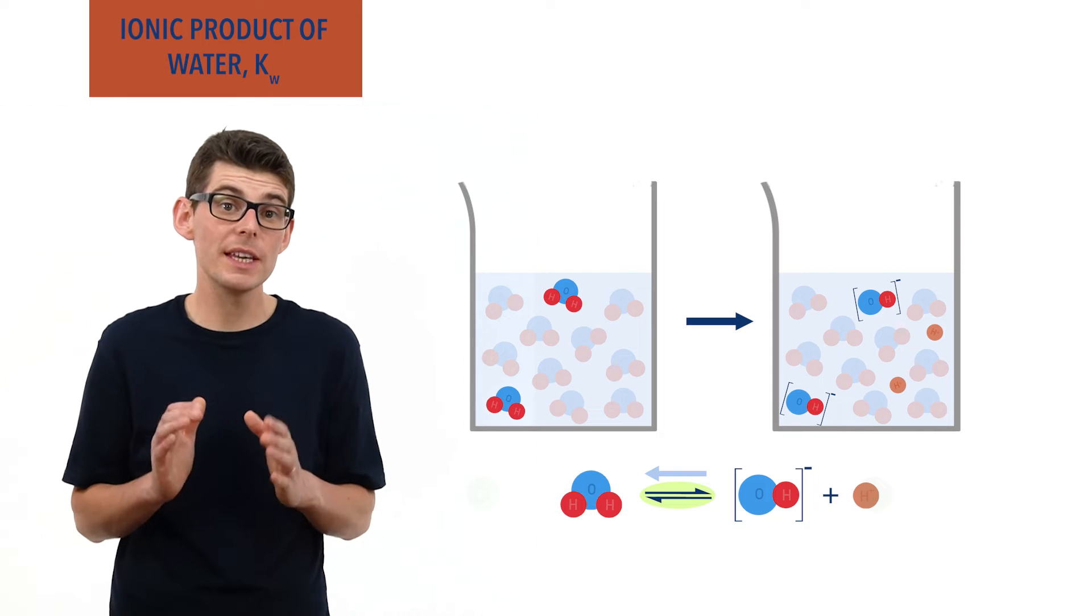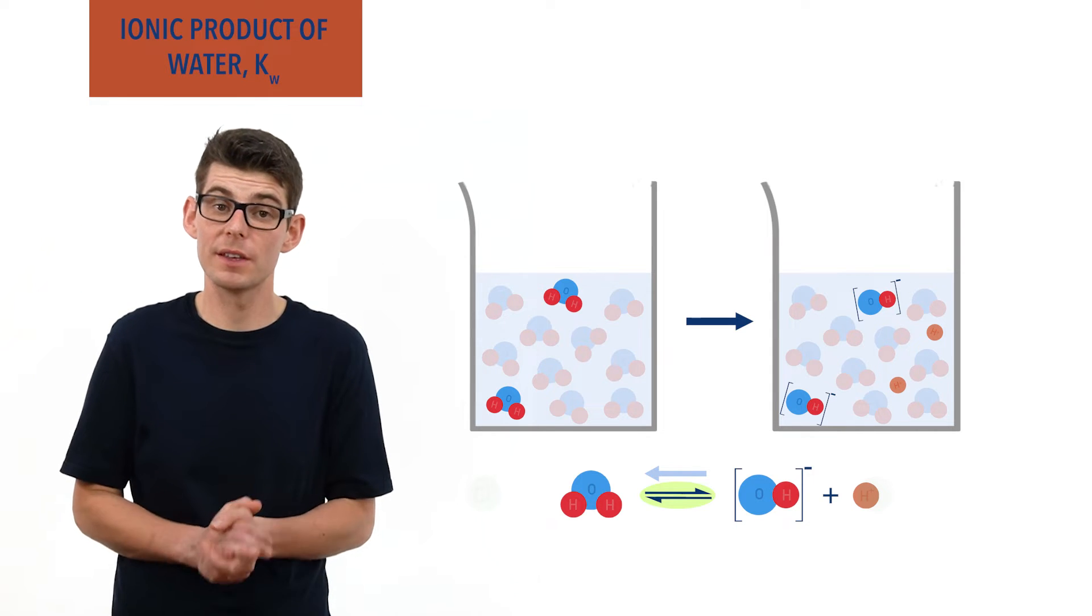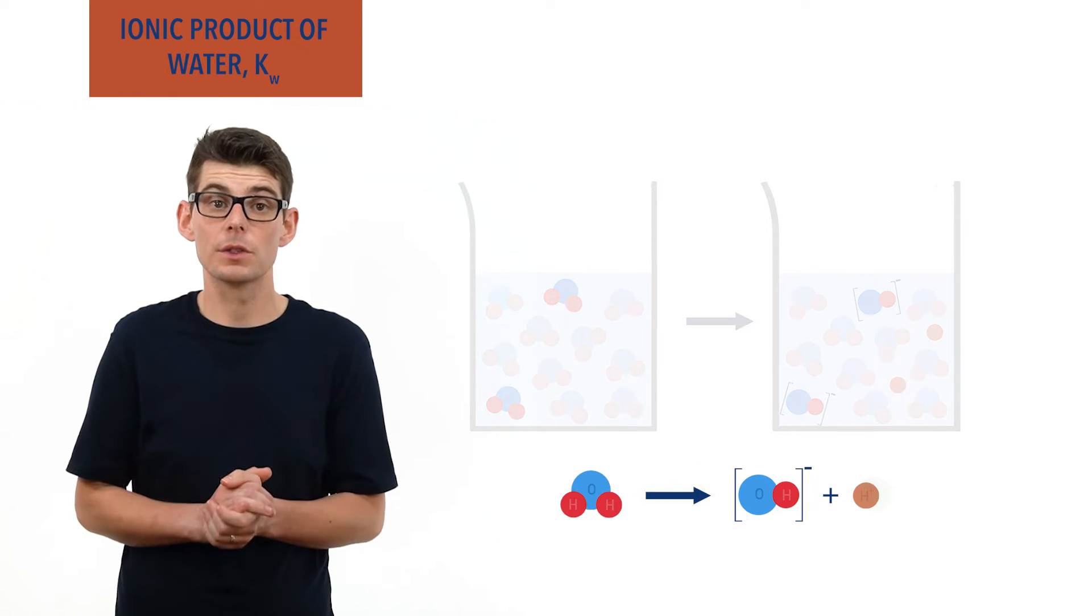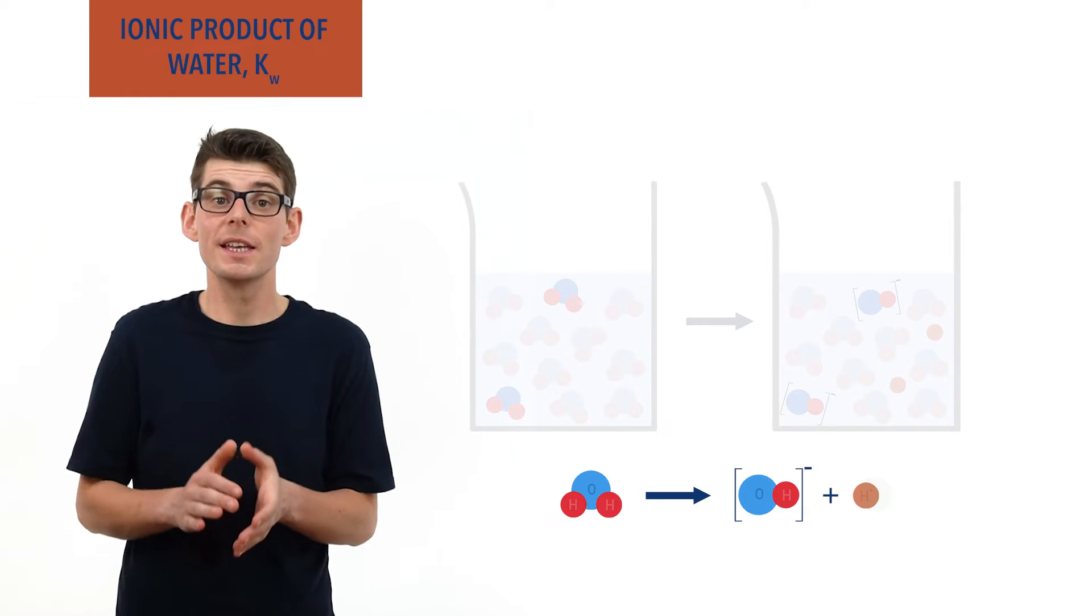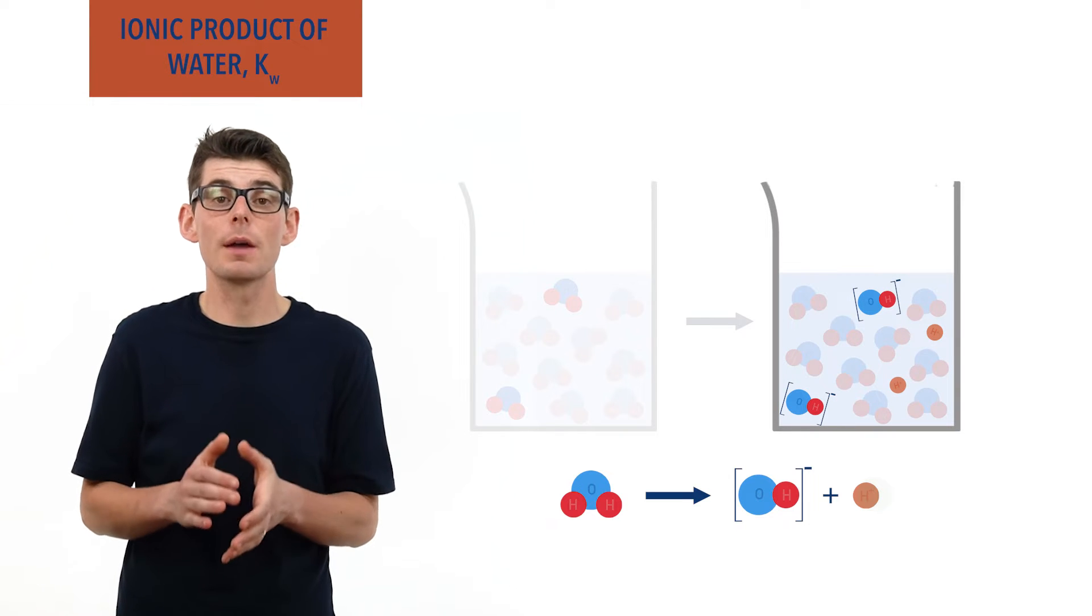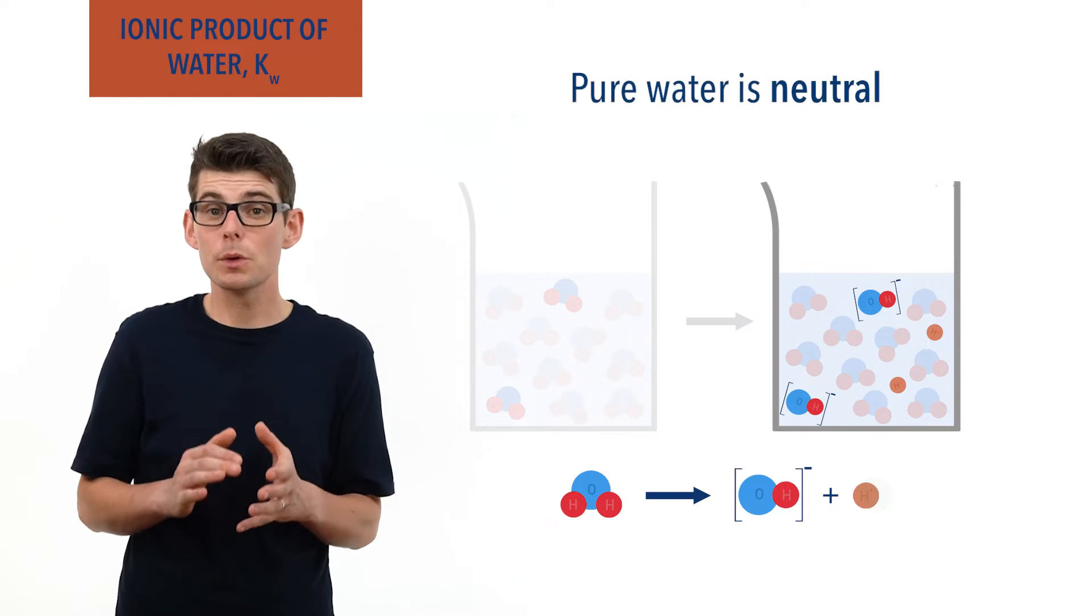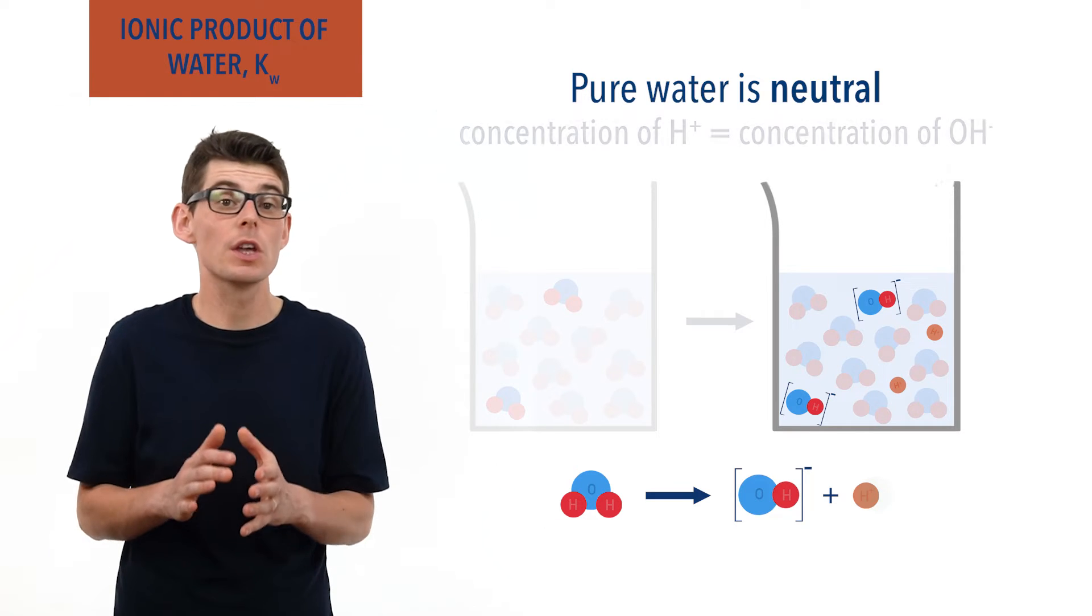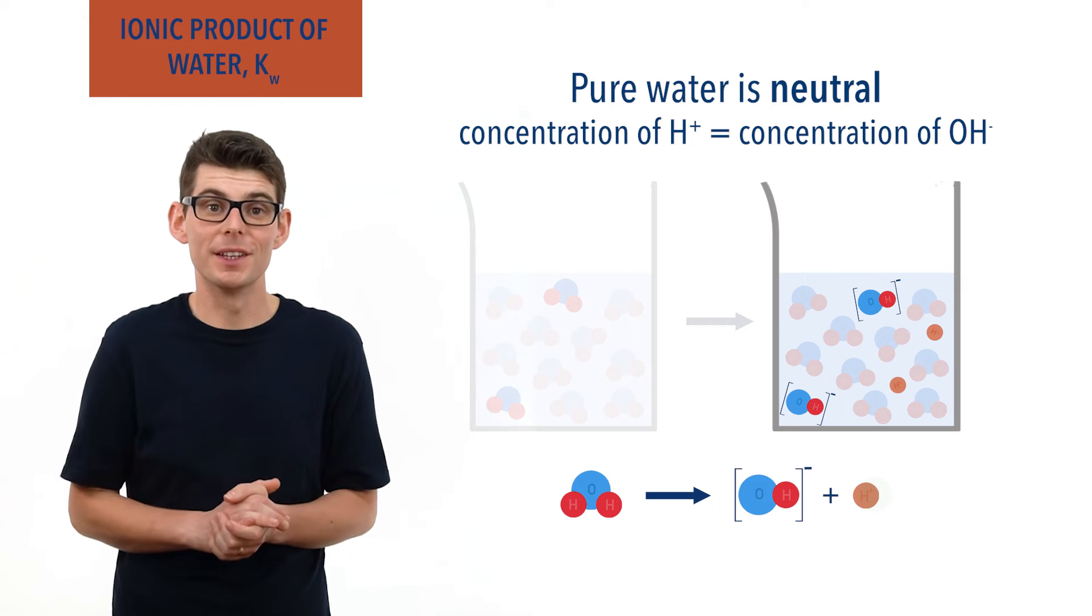Furthermore, because each molecule of water that dissociates produces equal amounts of H plus and OH minus ions, the solution formed is neither acidic nor alkaline and is described as neutral. A pure sample of water will always contain equal concentrations of H plus and OH minus ions.